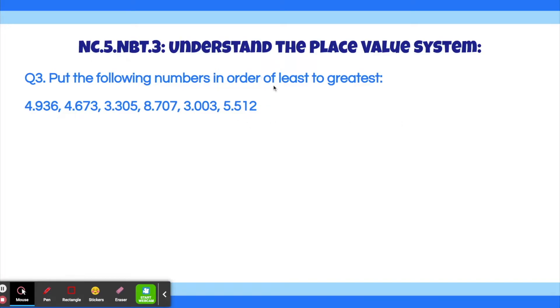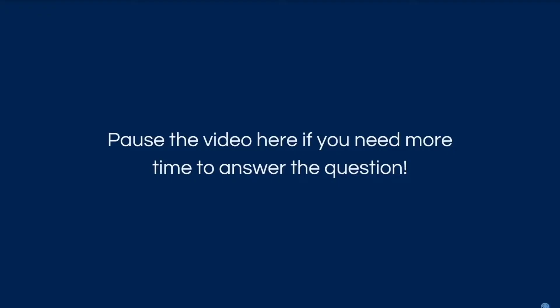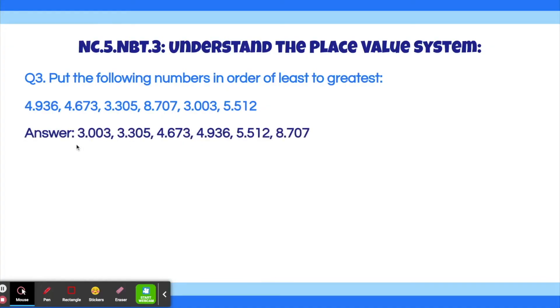Question 3. Put the following numbers in order from least to greatest: 4.936, 4.673, 3.305, 8.707, 3.003, and 5.512. I'll give you guys a few seconds. The answer to this problem is: 3.003, 3.305, 4.673, 4.936, 5.512, and 8.707.